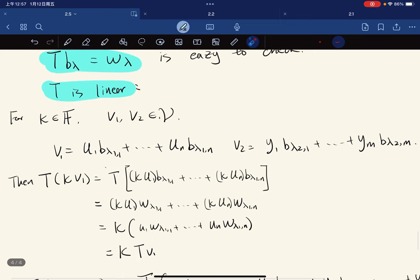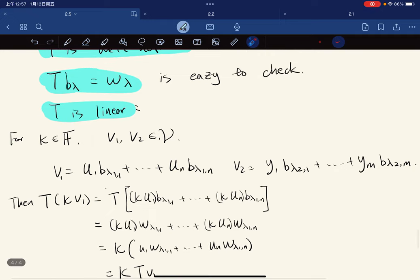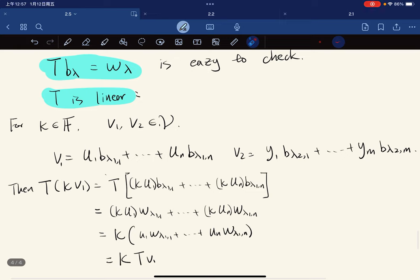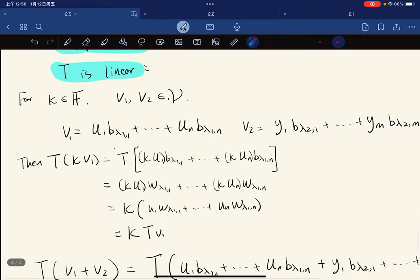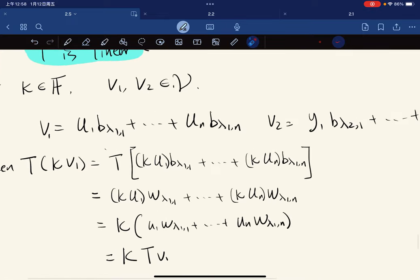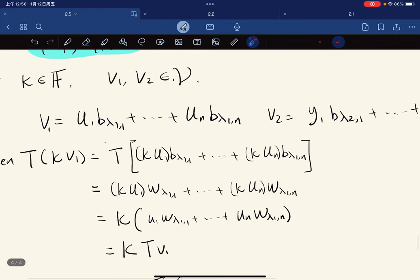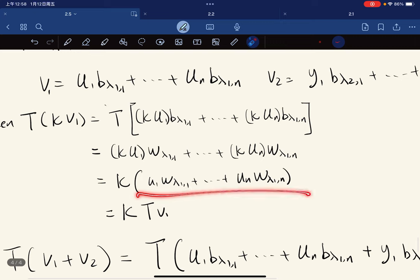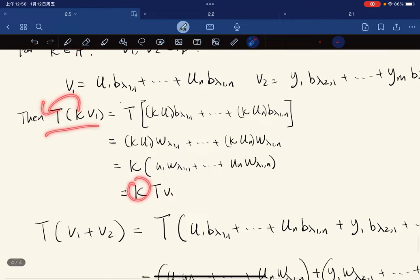This is easy to check. We want to show T is linear. We're going to show that it's distributive under addition and scalar multiplication. V1 is expressed like this and V2 can be expressed like this. Then T of KV1, we bring kappa in, and then after mapping, we group kappa. This is basically Tv1, so we can pull out the kappa.